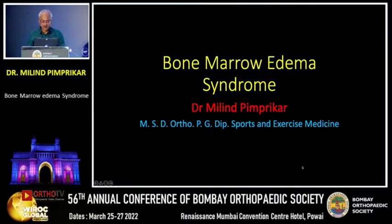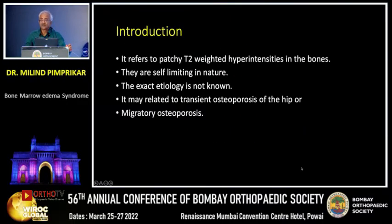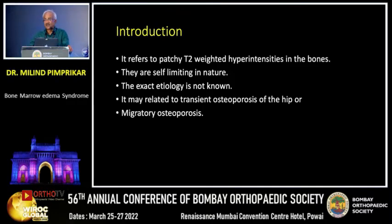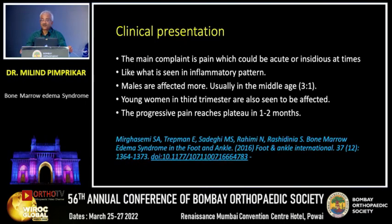Good evening, thank you for the opportunity organizers. This is a relatively new topic, and we have started seeing bone marrow edema in very large numbers on MRIs of patients who come to us with non-specific pains. It refers to a patchy T2-weighted hyper-intensity in the bone. They are usually self-limiting in nature. The exact etiology as of date is not known, but it may be related to transient osteoporosis of the hip or migratory osteoporosis, although recent research has stated that these patients may not have reduced BMDs.